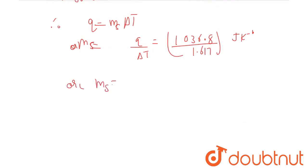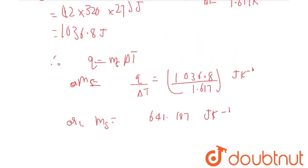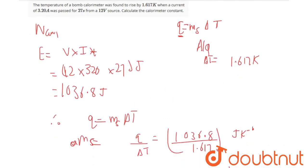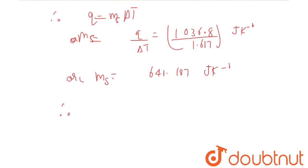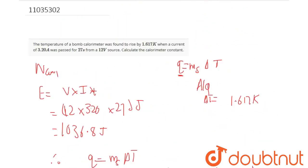On further simplification, this gives us 641.187 Joules per Kelvin. Therefore, the calorimeter constant equals 641.187 Joules per Kelvin. This is the final solution for this question.